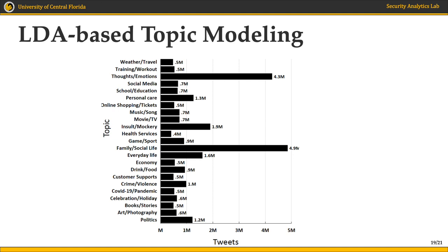Moreover, during this period, 0.5 million tweets were related to the COVID pandemic, and in general, except for the affirmation topics, tweets are distributed in the range of 0.4 to 2 million tweets per topic.